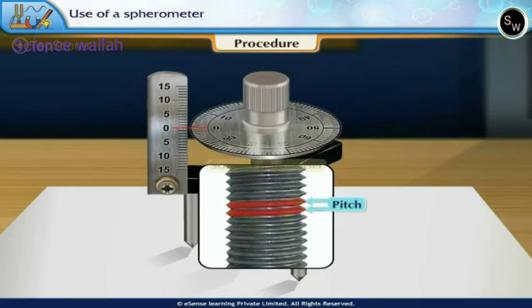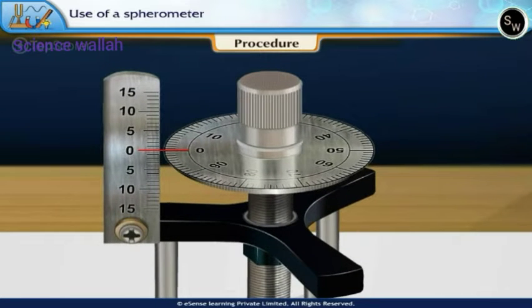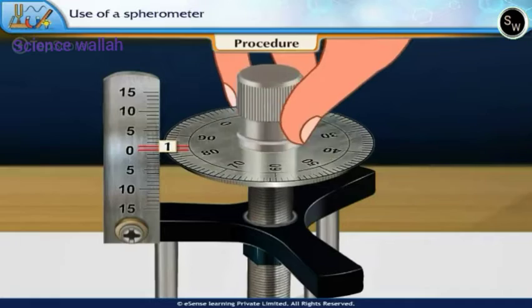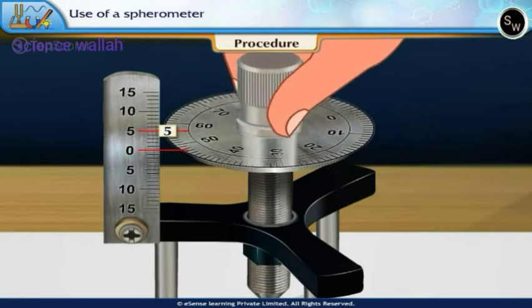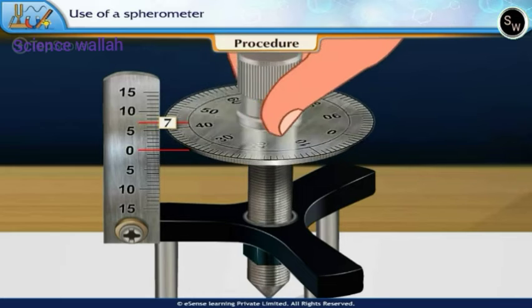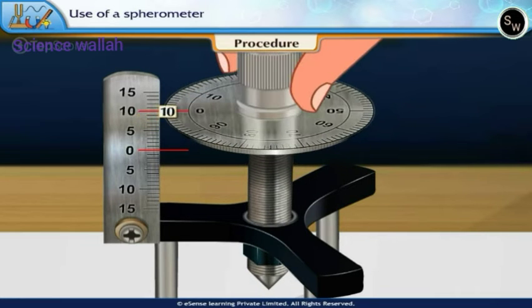Let us measure the pitch of the screw of the spherometer. Give 10 rotations and find the displacement of the edge of the circular disc on the main scale. The disc moves a distance of 1.0cm on the main scale.